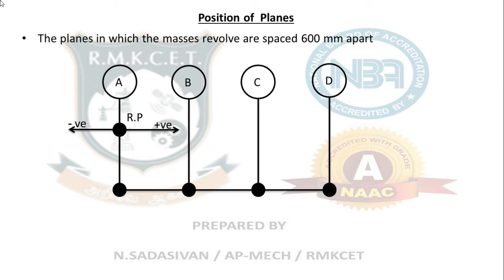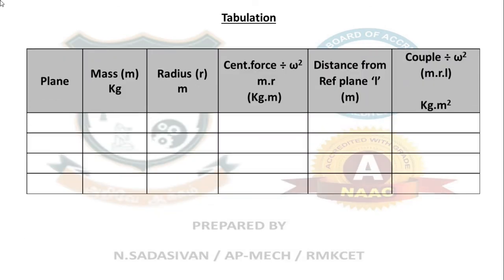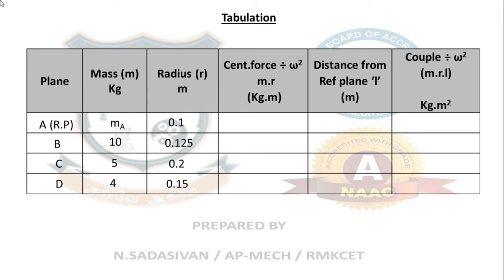Since A is the reference plane there is nothing to its left, so no negative distances. The distances from the reference plane are cumulative: A = 0, B = 0.6 m, C = 1.2 m, D = 1.8 m. Multiplying mass × radius (mr) column: 0.1·MA, 1.25, 1.0, 0.6. Then multiplying mr × distance (couple column): 0 for A, 0.75, 1.2, 1.08. Count the unknowns: one unknown in the couple column, none in the force column.